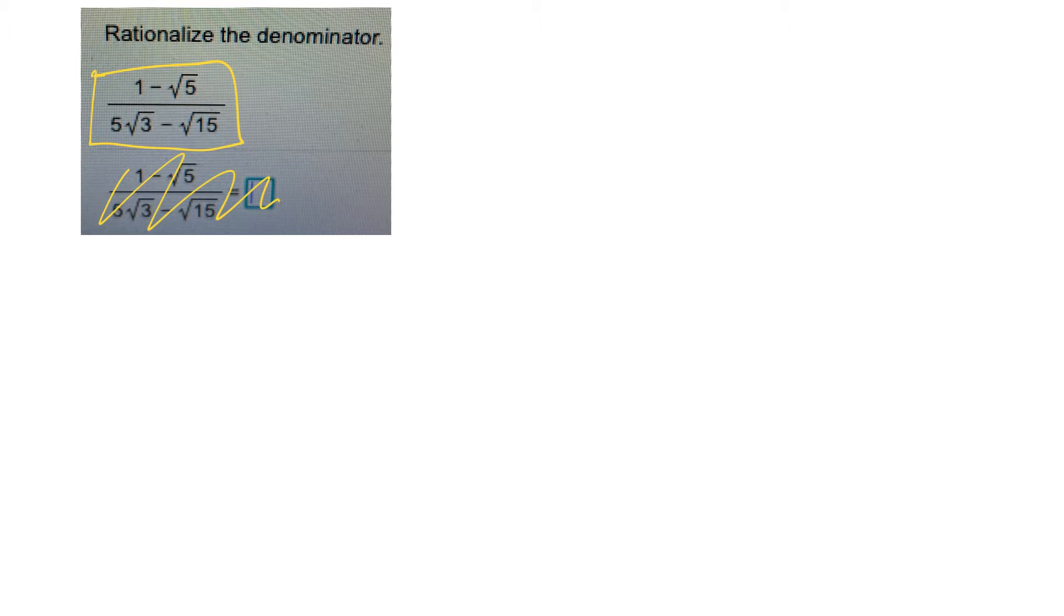To rationalize the denominator, you need to multiply top and bottom by the conjugate of the bottom. So the conjugate is the same as the bottom, so 5 root 3 and root 15, but instead of a minus there, you put a plus. If you multiply the bottom, you have to multiply the top too by the exact same thing.